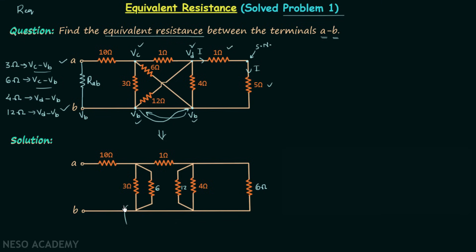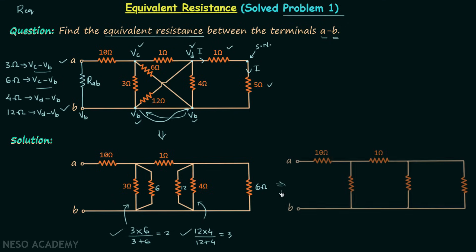We simplify the parallel combinations: 3 ohm parallel with 6 ohm gives 3 × 6 divided by 3 + 6, which equals 2 ohms. For the 4 ohm parallel with 12 ohm: 12 × 4 divided by 12 + 4 equals 3 ohms. We now replace each parallel pair with these single resistors — 2 ohms and 3 ohms respectively.